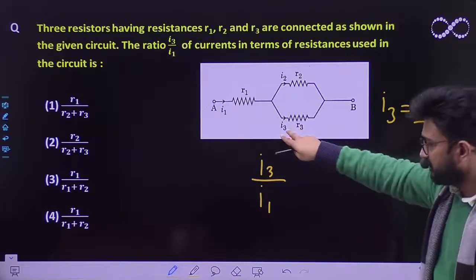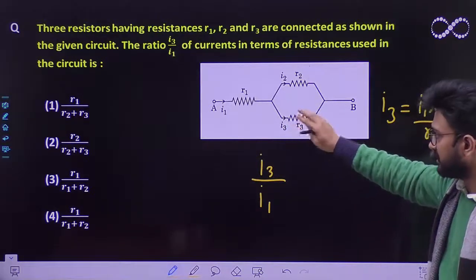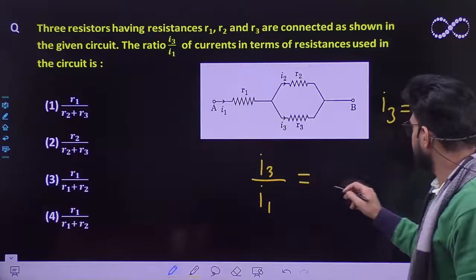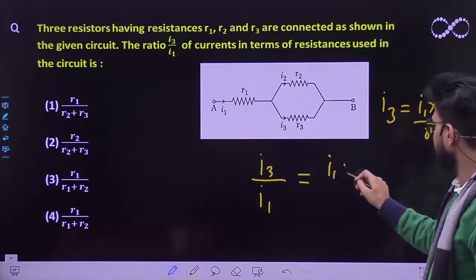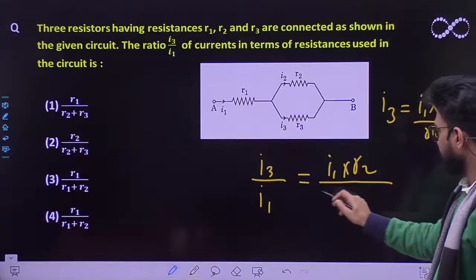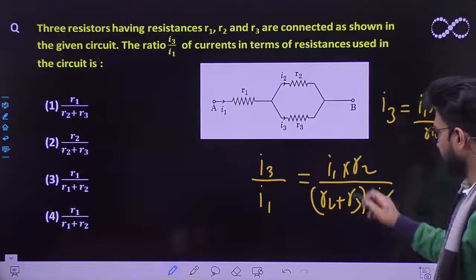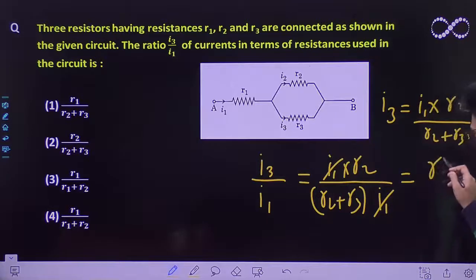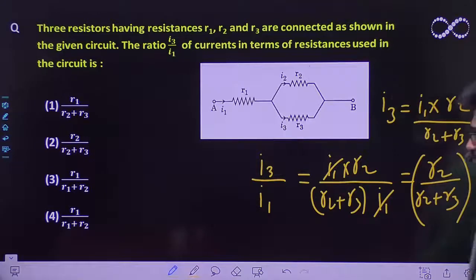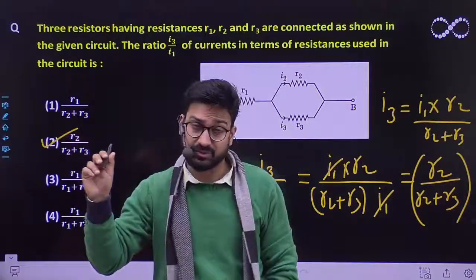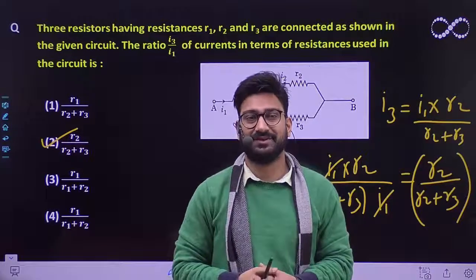If you have to find the current in this circuit, the resistor you need to multiply is the other one. Putting the value of I3, you will get I1 into R2 by R2 plus R3 multiplied by I1. I1 will cancel out. So you will get R2 by R2 plus R3 as your final answer. That means the third option is the correct option. I hope this question is clear to everyone. Thank you.